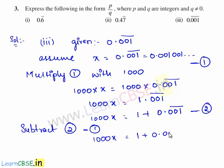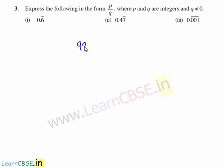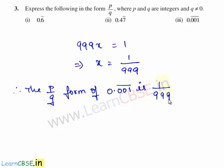Now let us subtract equation 1 from equation 2. Therefore 1000x minus x gives 999x. Here 0.001 bar gets cancelled and we are left with 1. So 999x is equal to 1, which implies x is equal to 1 upon 999. Therefore the p by q form of the given decimal expansion 0.001 bar is 1 by 999, where 1 and 999 are integers and the denominator is not equal to 0.